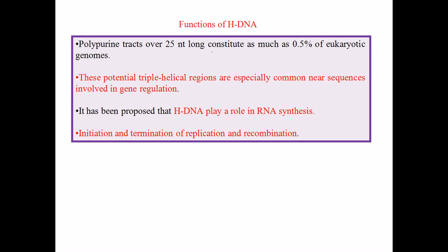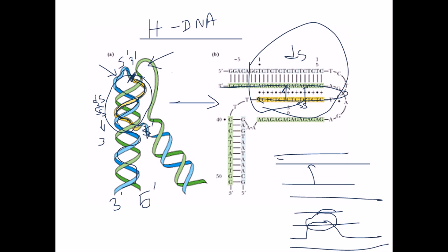What are the functions of this H-DNA? Most of the time this kind of DNA is formed due to the presence of repeated sequences — for example, AG AG AG AG on one strand and CT CT CT on the complementary strand. So it is a repeated polypurine sequence like AG AG AG AG.